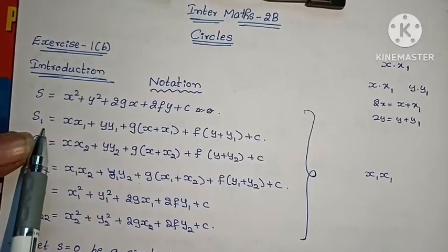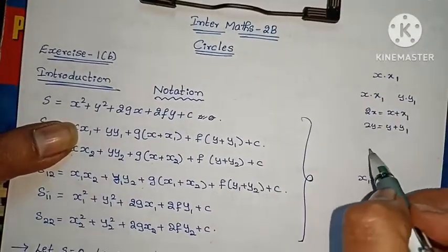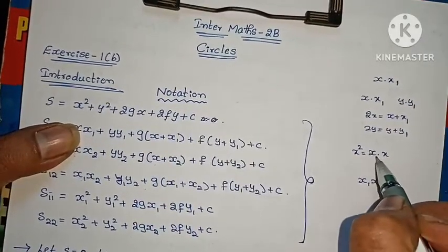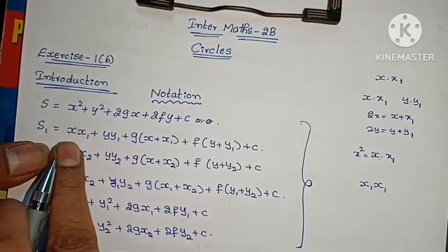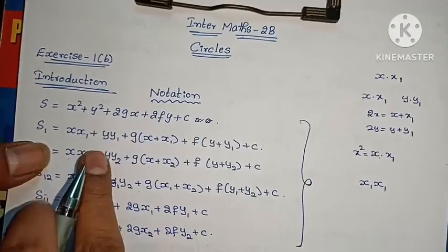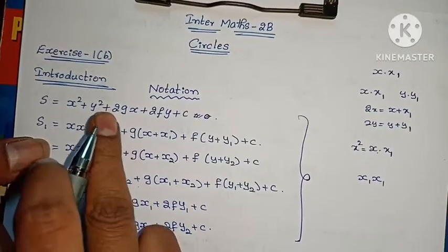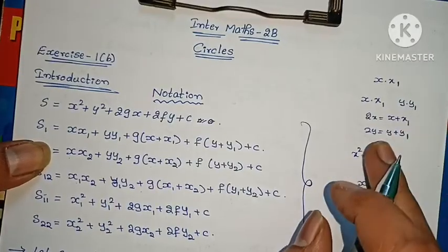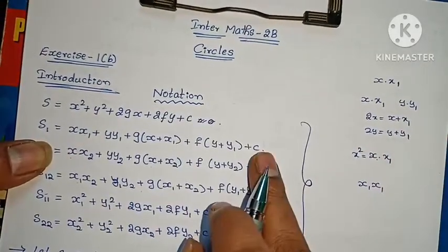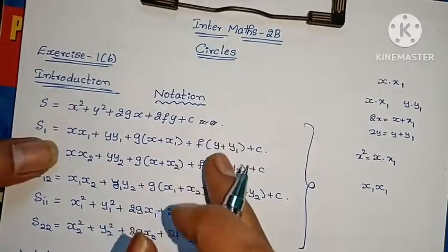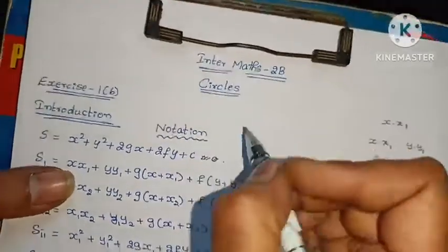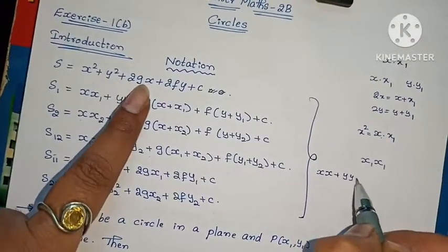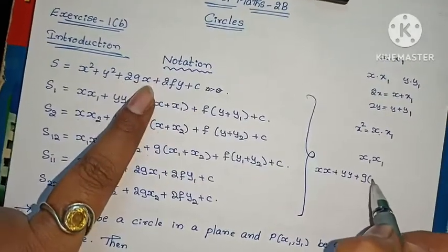Now, S1 means: x squared is x into x, and the formula involves x squared plus y squared plus g into 2x plus 2fy plus c. When we have this formula, x squared equals x times x, y squared equals y times y, plus g into 2x equals x, f equals y.